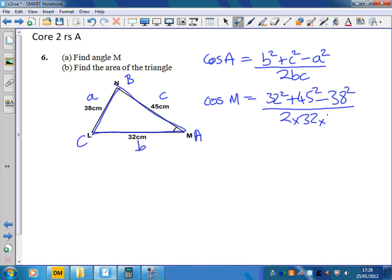32 times 45. I'm just going to type all that into my calculator and find it tells me that's 107 over 192. Now that was cosine of M, so to get M I'm going to have to do inverse cosine on that